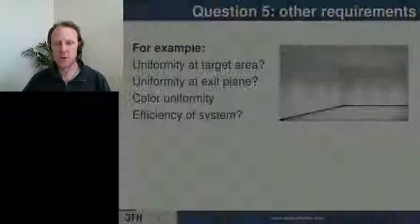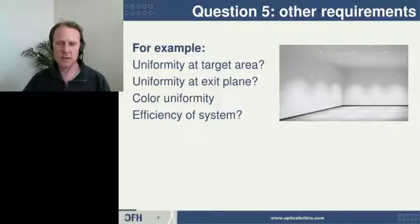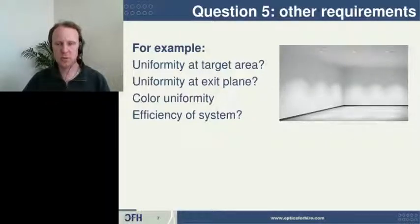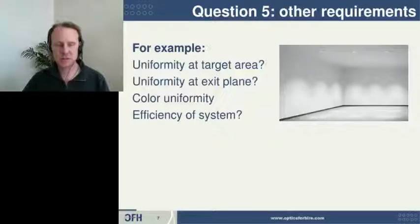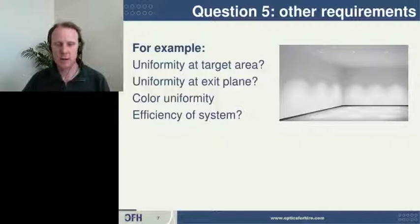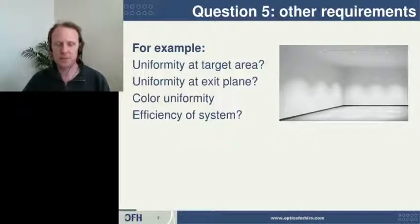The fifth question that you should communicate is any other requirements you have. Sometimes applications require very specific uniformity at the target area — meaning where the light hits. Sometimes there's a specific requirement for light uniformity as it exits the light fixture. Other possible requirements are color uniformity or overall efficiency of the system.